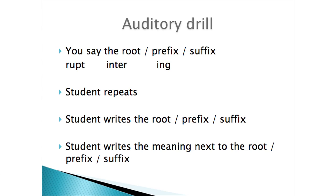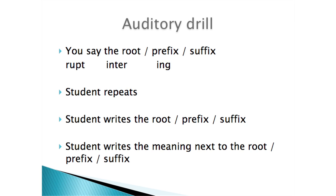For an auditory drill, you say the root, the prefix, and the suffix, and the student repeats them. Then you could flip over your paper and write the root, prefix, and suffix, and write the meaning next to each. For example: rupt — to break; inter — between; -ing — showing it's happening now. So 'interrupting' means breaking between, happening now.